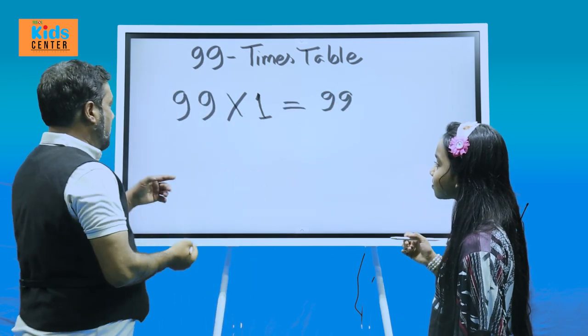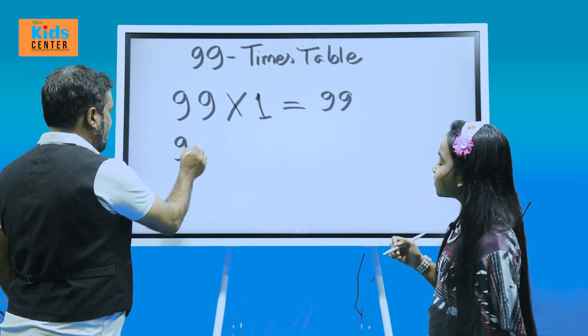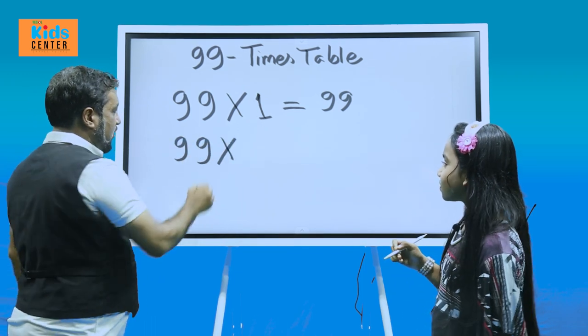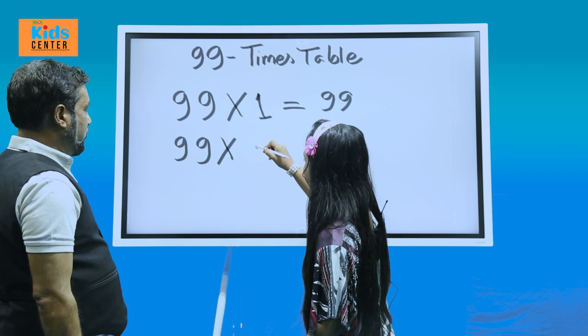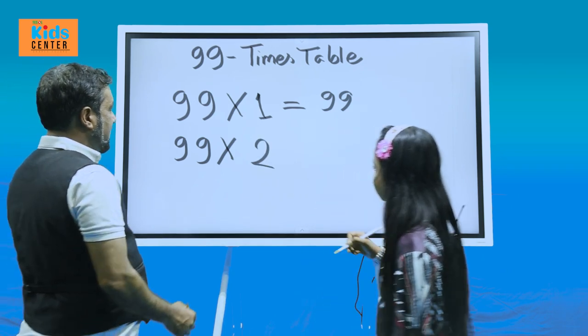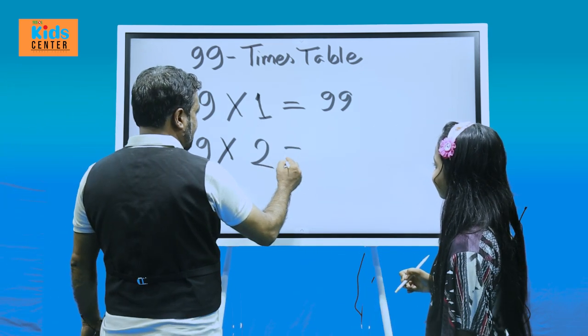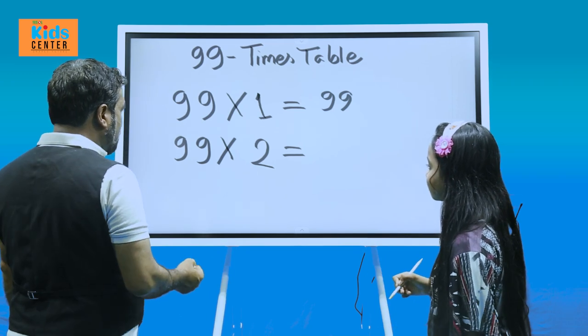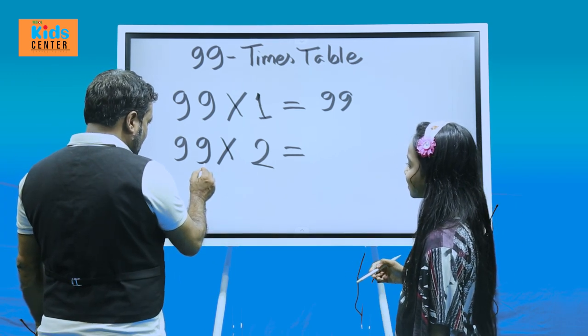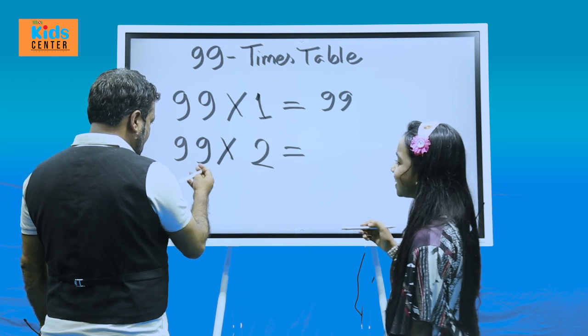Now, let's write some more. Okay. 99 times. Now, let's start. Two. Yeah, that's good. Now, how we can do that, right?